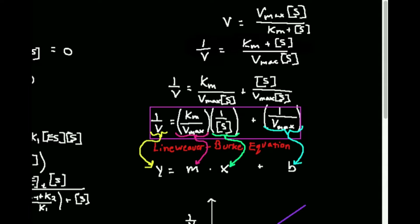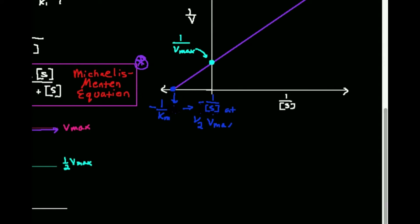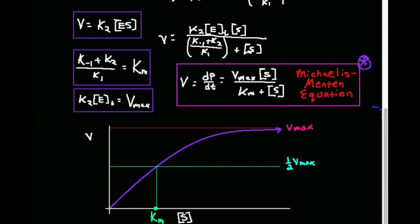In this video we're going to discuss the generation of a Lineweaver-Burk plot, and we're going to go over basically how you do this. All of it that we're going to be doing is based on what we talked about in the last video - this hyperbolic graph of the Michaelis-Menten plot of rate versus the substrate concentration.